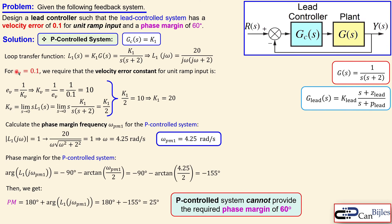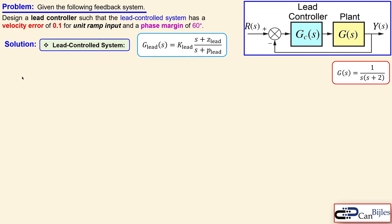The velocity error specification is satisfied, but the phase margin of only 25° is not. Decreasing the gain would increase the phase margin but worsen the velocity error — these requirements conflict. Therefore, the P controller alone cannot satisfy both specifications, and we must use a lead controller.